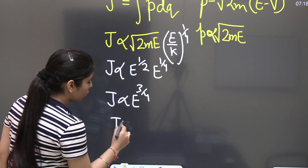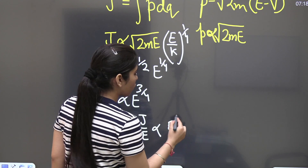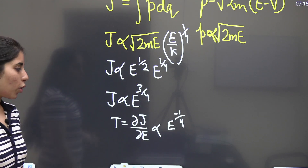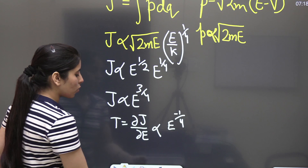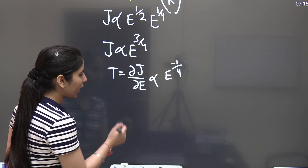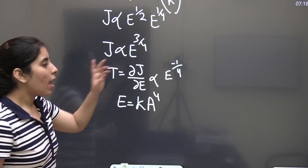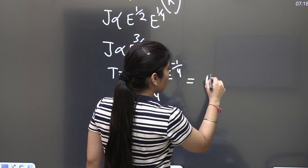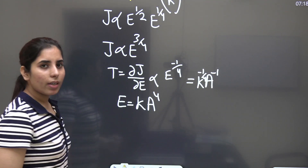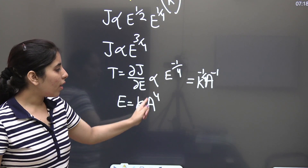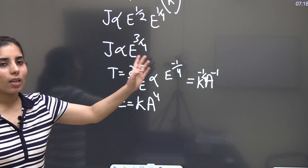The time period is T = ∂j/∂E. Differentiating j ∝ E^(3/4) with respect to E gives the exponent 3/4 − 1 = −1/4, so T ∝ E^(−1/4). Now, since the particle was at rest at x = a, the total energy equals the potential energy there: E = ka⁴. Substituting: T ∝ (ka⁴)^(−1/4) = k^(−1/4) · a^(−1). The 4 and 4 cancel, leaving T proportional to a^(−1).